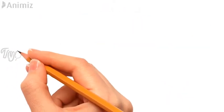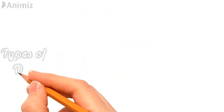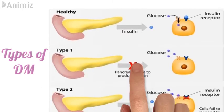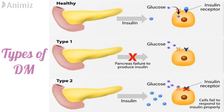Now let's see the different types of diabetes mellitus. In a healthy individual, beta cells of the pancreas secrete insulin molecules. These insulin molecules bind to their receptor on the cell surface and open up the GLUT4 channel, which helps glucose molecules move inside the cell.